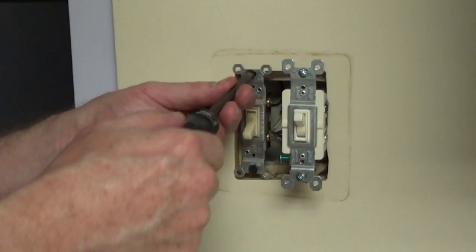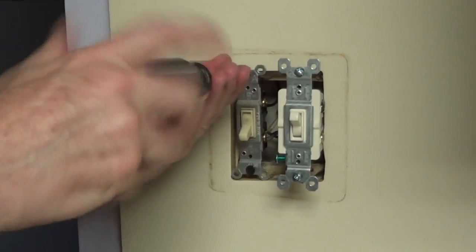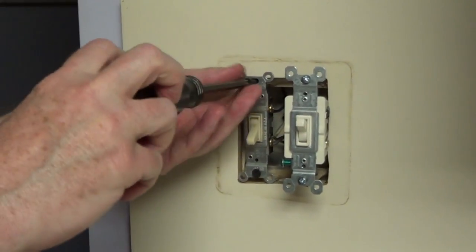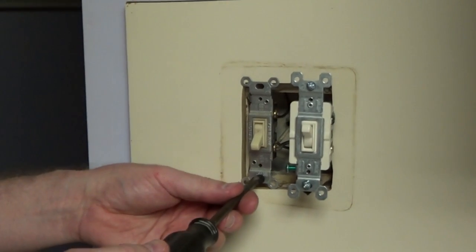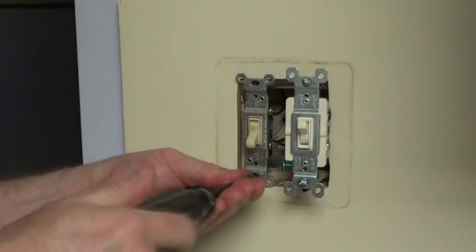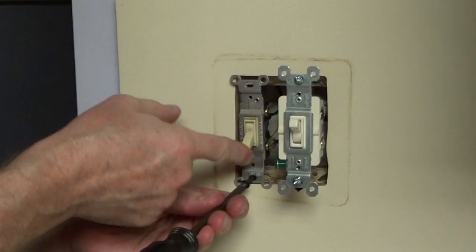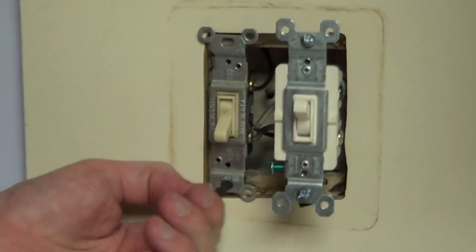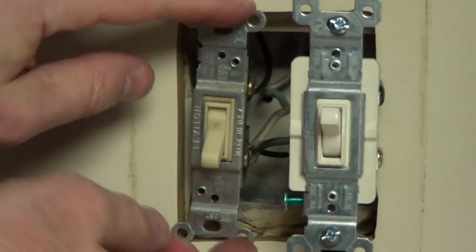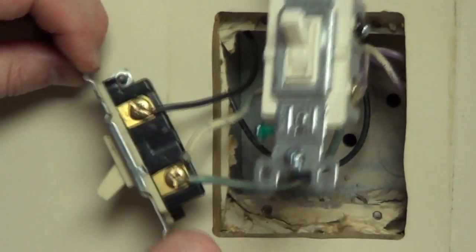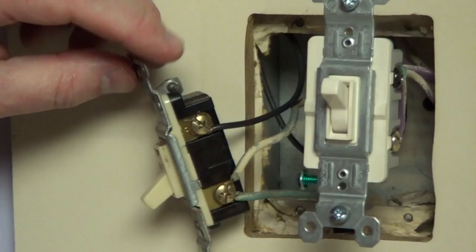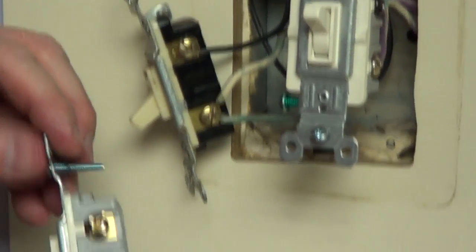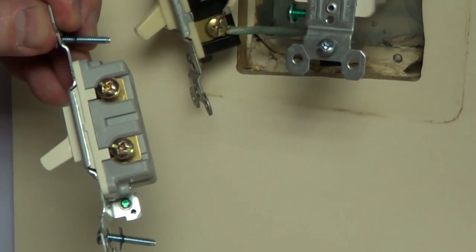Now we're going to replace the single-pole switch. This is very easy. If you have one switch that goes to your lights, you have a single-pole switch. A single-pole switch is marked with on and off on the lever, whereas a three-way switch doesn't have any markings at all. We're just going to unscrew the screw terminals and connect the new single-pole switch. It doesn't matter which wire we put on which screw terminal.